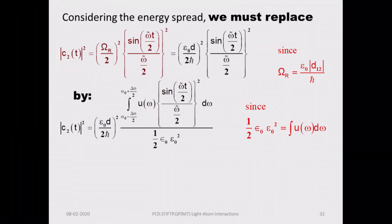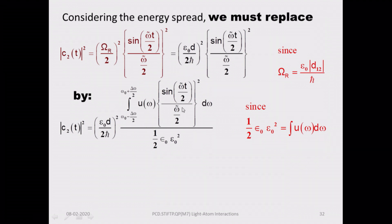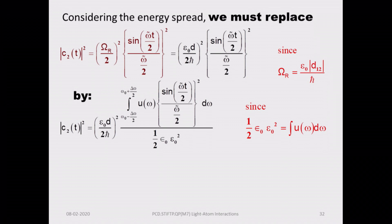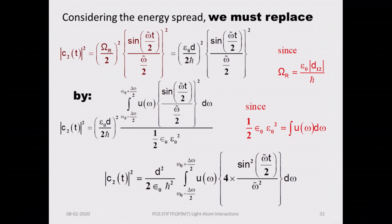Essentially you will have to replace the term we got. Here you need to integrate over the spectral density from the lower end of the energy width to the upper end. If the angular frequency is omega_0 plus or minus delta_omega over 2, you integrate from the lower limit to the upper limit. Carrying out this integration gives a different result.